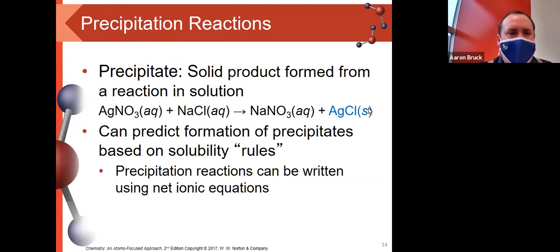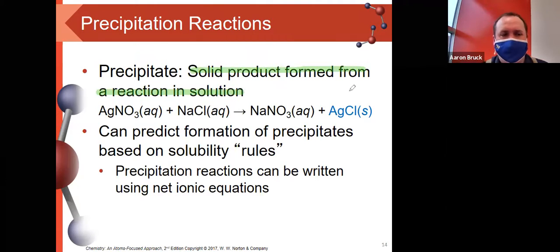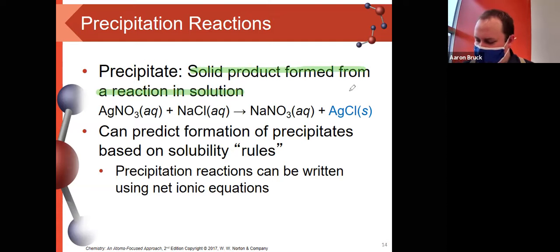The first type, precipitation reactions, are ones that form precipitates. By definition, a precipitate is a solid product formed from a reaction that occurs in solution. In other words, they are the insoluble product of soluble reactants. I put one solution together with another, I get a solid that forms out.